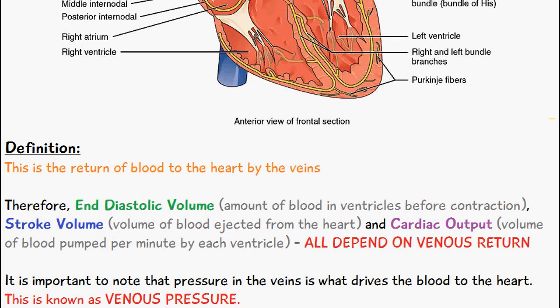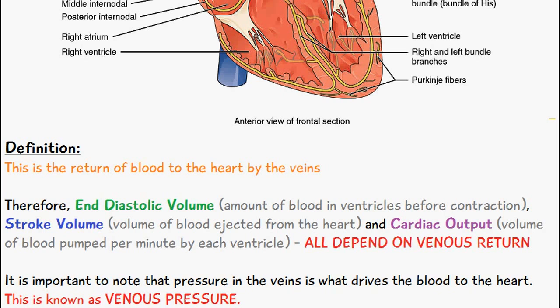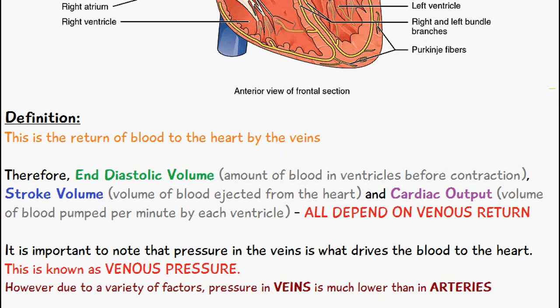It's important to note that the pressure in the veins is what drives the blood back to the heart, and this is known as venous pressure. Venous pressure is the pressure inside the veins, and this pressure is what's driving the blood back to the heart. Due to a variety of factors, the pressure in the veins is much lower than in arteries — a separate video on the differences between veins and arteries, and also capillaries, will be uploaded soon.